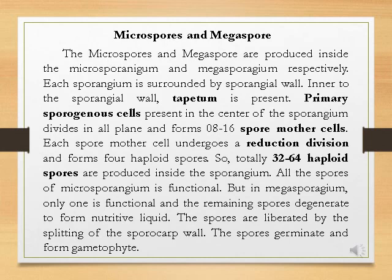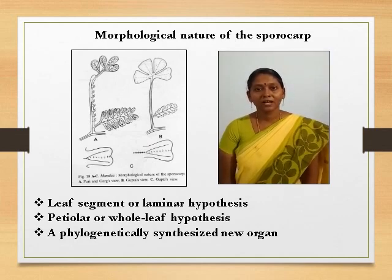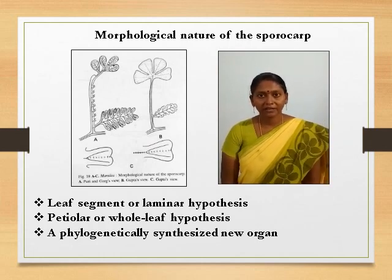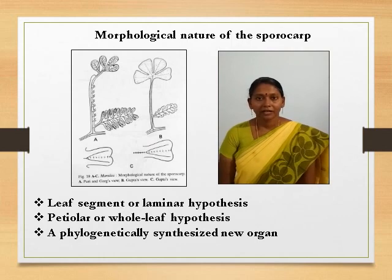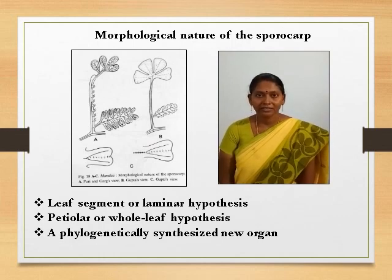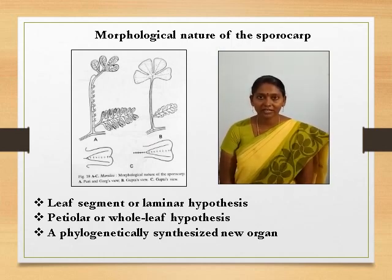The spores are liberated by the splitting of the sporocarp wall with the help of the gelatinous ring. The spores germinate and form the gametophyte. The gametophyte is haploid and develops from the spores; spores are the first cell of the gametophytic generation. The morphological nature of the sporocarp of Marsilea is still under debate. Workers have explained their views regarding the morphology, and all the views can be grouped under three different categories or hypotheses.